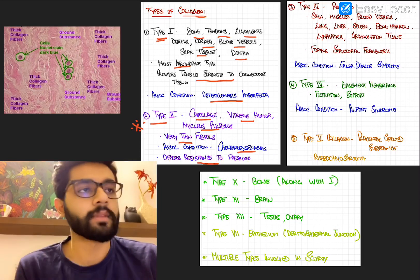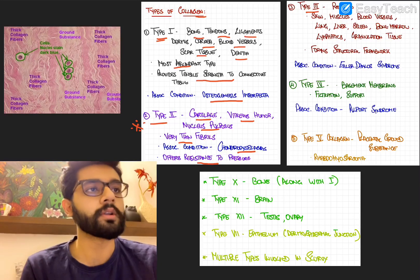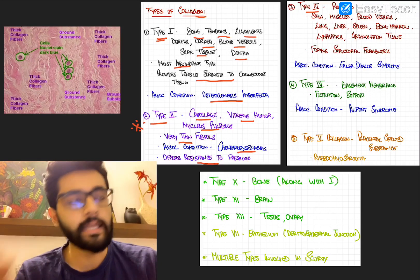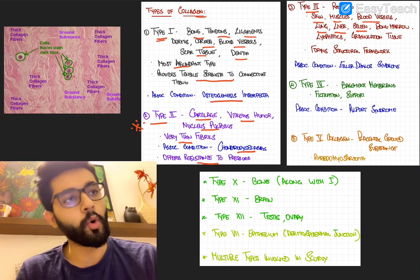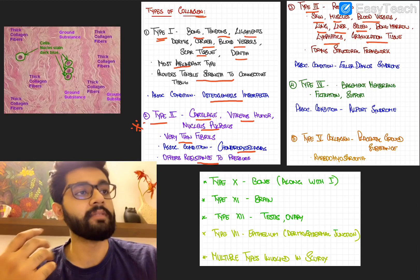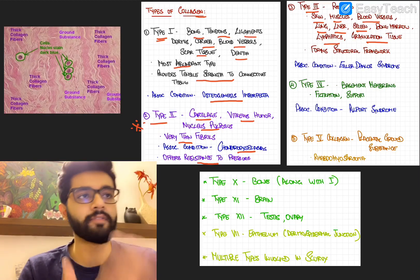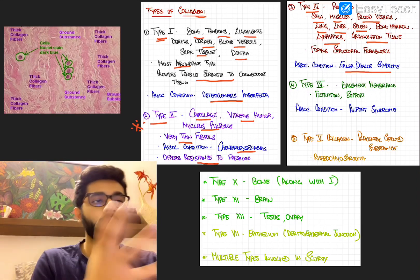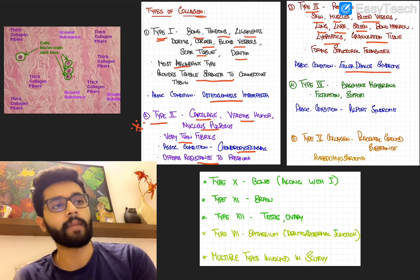Let's go to type 3 collagen, which is also called reticulin, again, fairly important. It's found in a lot of places, mainly in organs, but also in the skin, muscles, blood vessels, lung, liver, spleen, bone marrow, lymphatics, and even in granulation tissue. The associated condition with defects of type 3 collagen is Ehler-Danlos syndrome. So ED syndrome, particularly Ehler-Danlos type 4, is very much associated with defects in type 3 collagen.